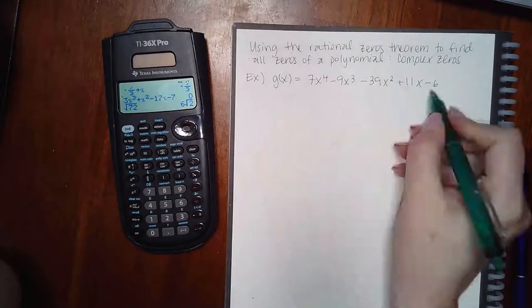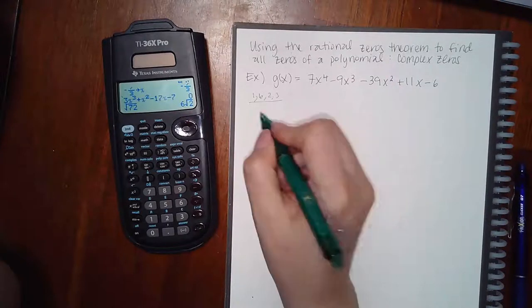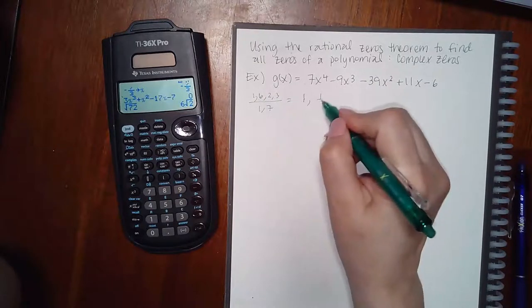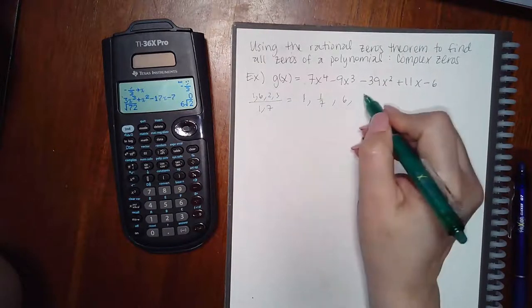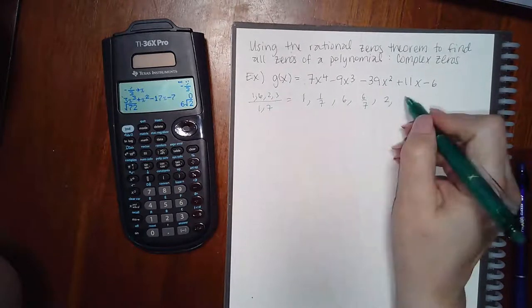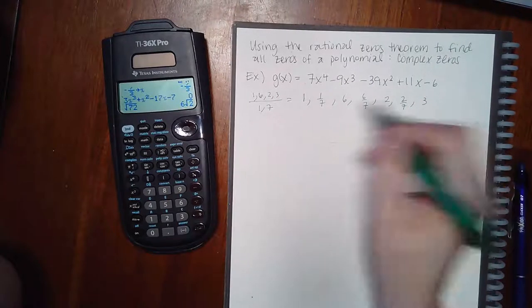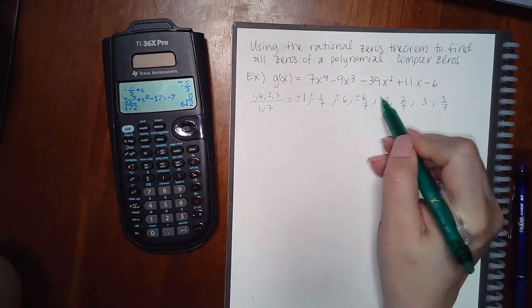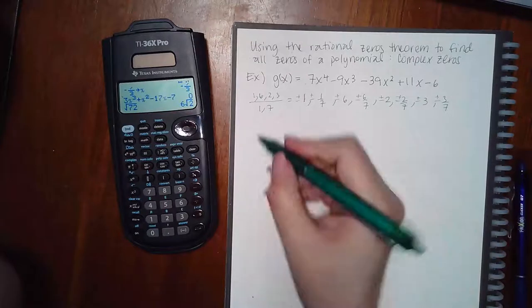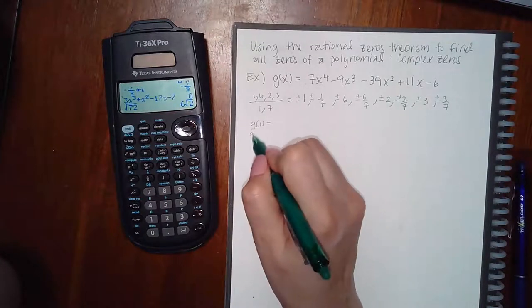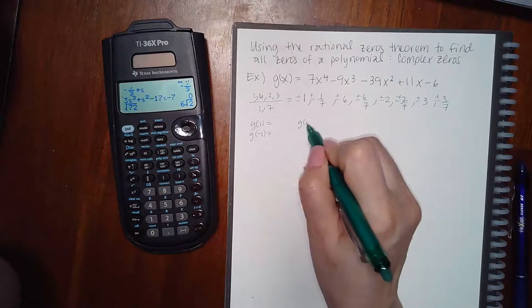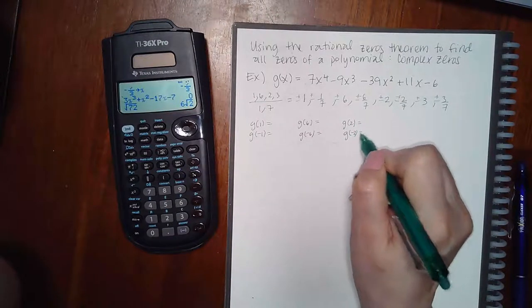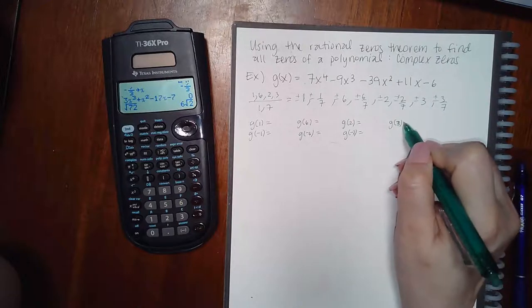Okay, so the factors of 6 are 1 and 6, 2 and 3. Factors of 7 are 1 and 7. 1 over 1 is 1, 1 over 7, 6 over 1 is 6, 6 over 7, 2 over 1 is 2, 2 over 7, 3 over 1 is 3, and then 3 over 7. And again, all sign variations of each one of these numbers. So I'm going to do again, I like to do the whole numbers first when I do the remainder theorem. And I don't know how far I'm going to have to go. I'm just rewriting all the whole numbers first. And then if I have to, I'll do all the fractions.